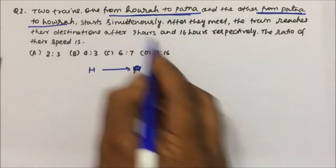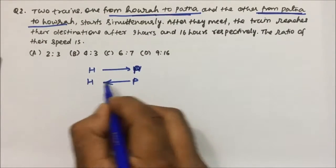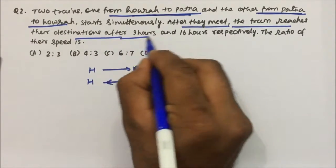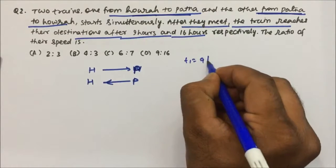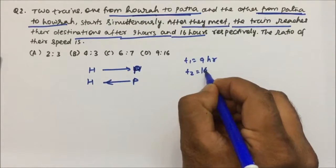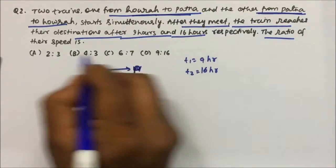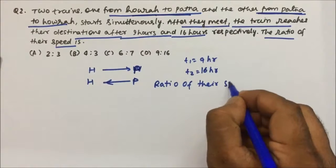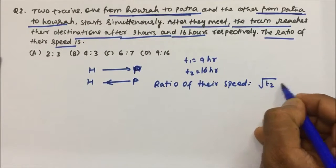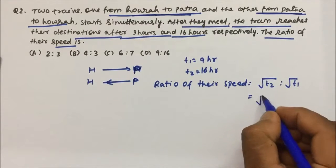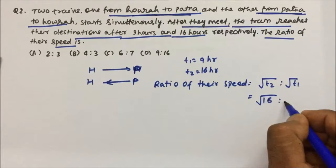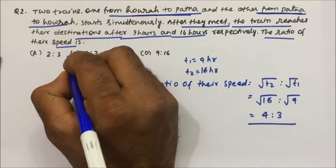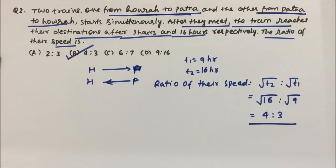Question 2: Two trains, one from Howrah to Patna and the other from Patna to Howrah, start simultaneously. After they meet, the trains reach their destinations after 9 hours and 16 hours respectively, so t1 = 9 hours and t2 = 16 hours. The ratio of their speeds = √t2 : √t1 = √16 : √9 = 4 : 3. The answer is option B. Thanks for watching the video.